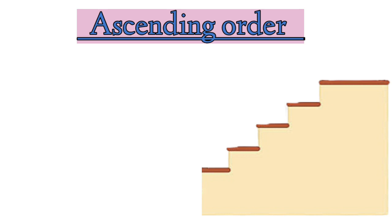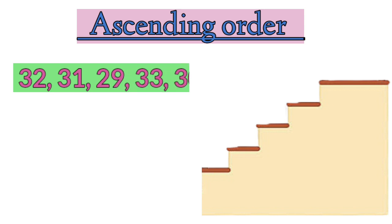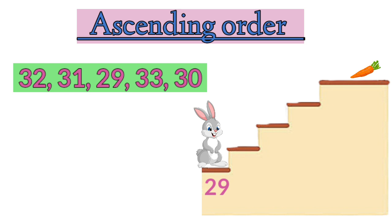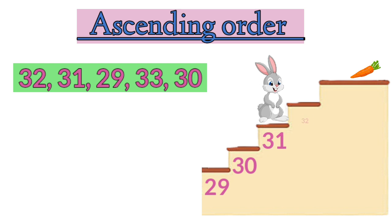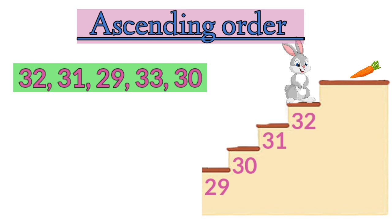Now let's arrange another group of numbers in ascending order. The numbers are 32, 31, 29, 33, 30. Children, let's help Mr. Bunny once again to get his carrot by arranging the numbers in ascending order. Among these given numbers, which number is the smallest? That's right, number 29 is the smallest number and it will come in the first place. Next will be 30, then 31, followed by 32, and lastly 33.